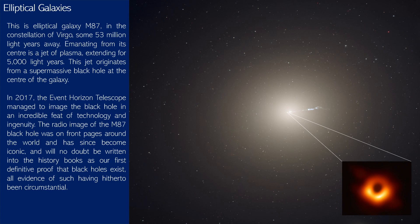This is elliptical galaxy M87 in the constellation of Virgo, some 53 million light years away. Emanating from its center is a jet of plasma extending for 5,000 light years, originating from a supermassive black hole. In 2017, the Event Horizon Telescope managed to image that black hole in an incredible feat of technology and ingenuity. The radio image of the M87 black hole appeared on front pages around the world and has become iconic — our first definitive proof that black holes exist, all prior evidence having been circumstantial.